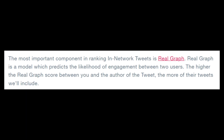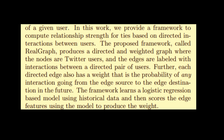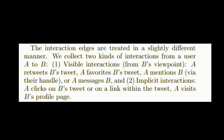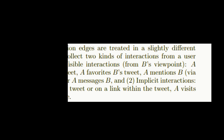Let's first consider the in-network sources. For this, Twitter constructs something called a real graph. It is a directed and weighted graph where the nodes are the Twitter users and the edges are labeled with the interactions between different pairs of users. According to Twitter's research paper, there are two types of interactions: visible interactions, in which you like or favorite their tweet, and implicit interactions, when you click on someone's tweet, a link within the tweet, or visit their profile page.